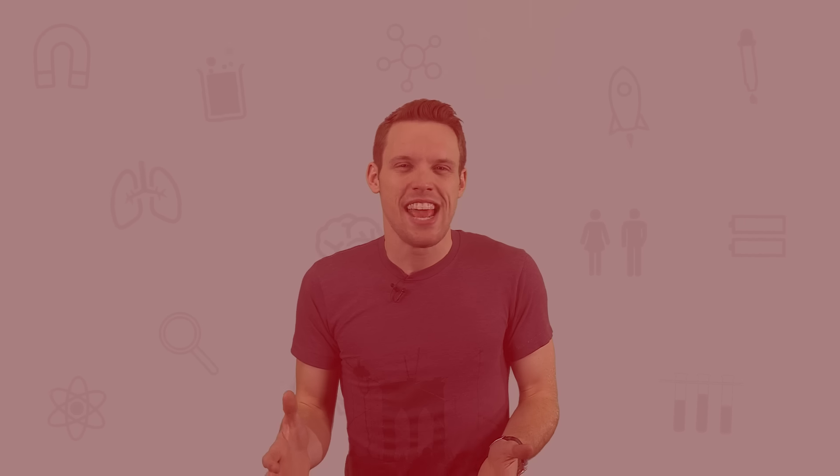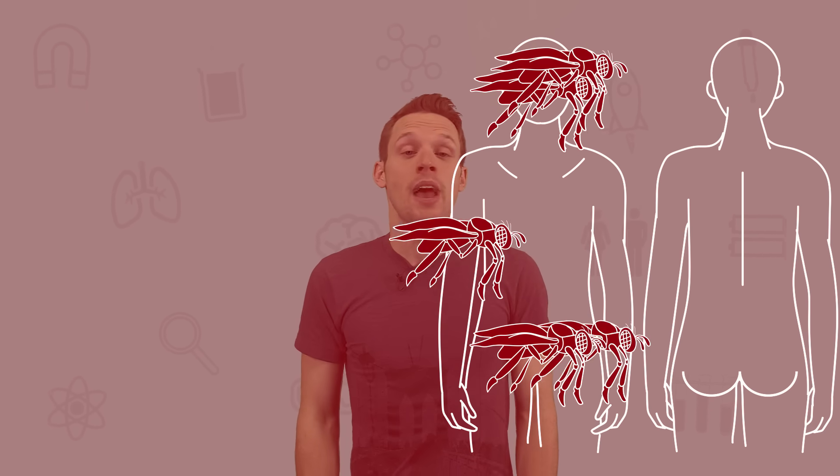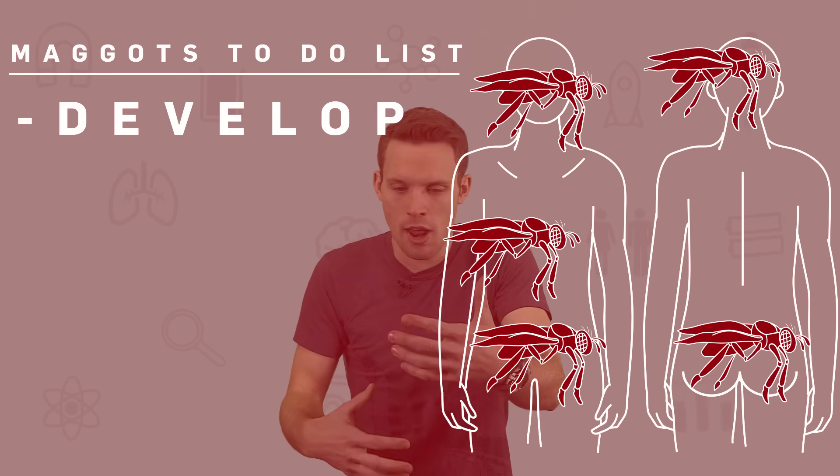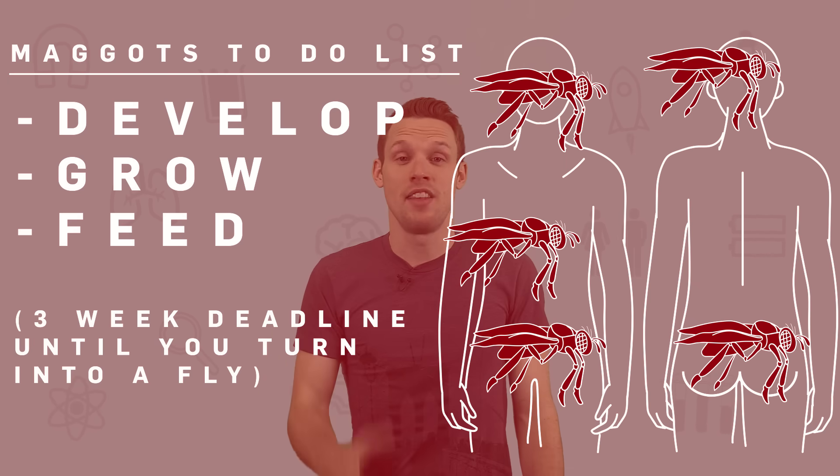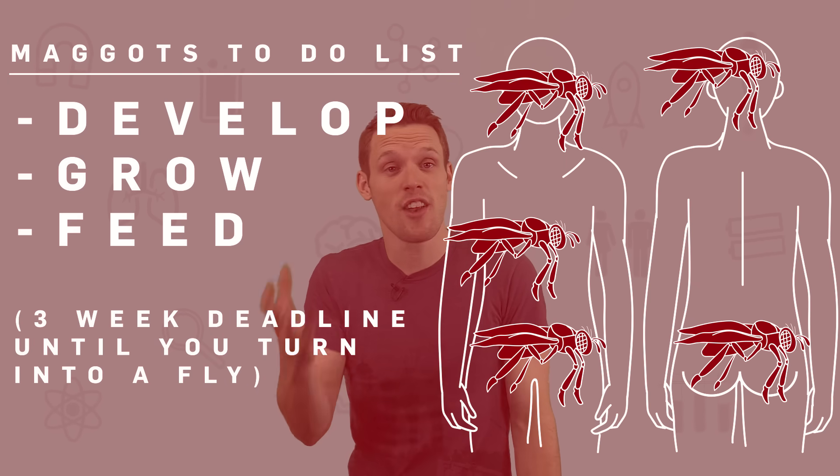Now we get to flies. If they have access, flies will lay their eggs at all the entrances of the body, and over the next three weeks maggots develop, grow, and feed. And the life stage of the maggots into flies is also another way of determining a corpse's time of death.